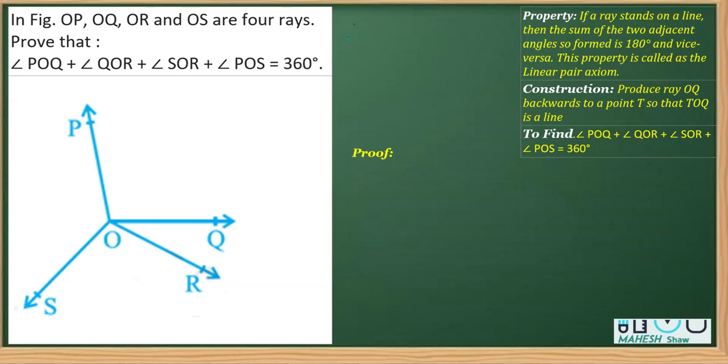This is one more question based on the property called linear pair, which says that in a straight line, if a ray stands on a straight line, the sum of two adjacent angles so formed is equal to 180 degrees. This is the property. Let's see what the question says.